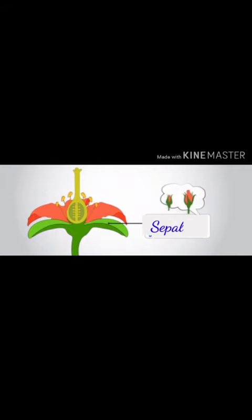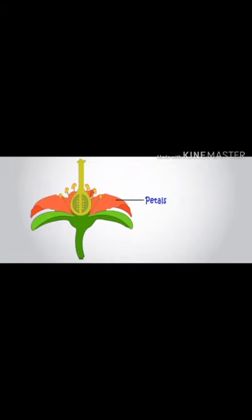First come the sepals. Sepals are small soft green leaves which keep the bud covered when the bud is closed. The second part, which is the most colorful part of a flower, is the petals. Petals are very soft and brightly colored.